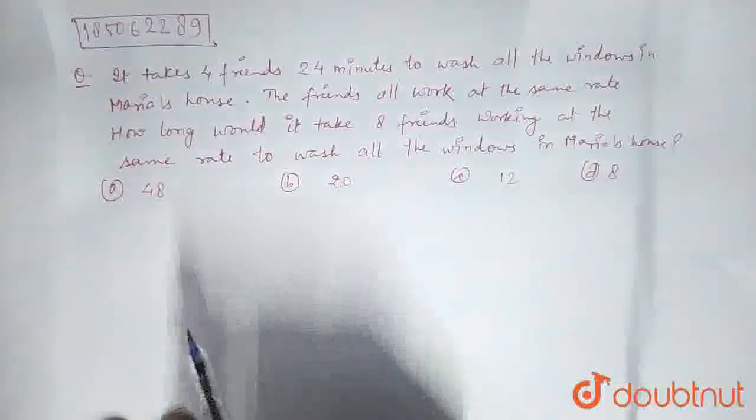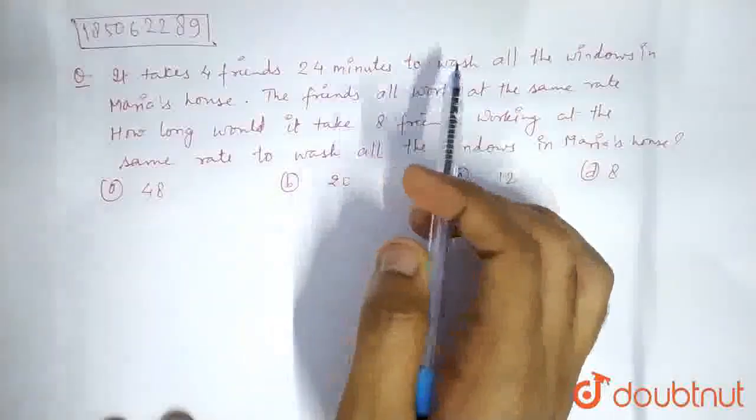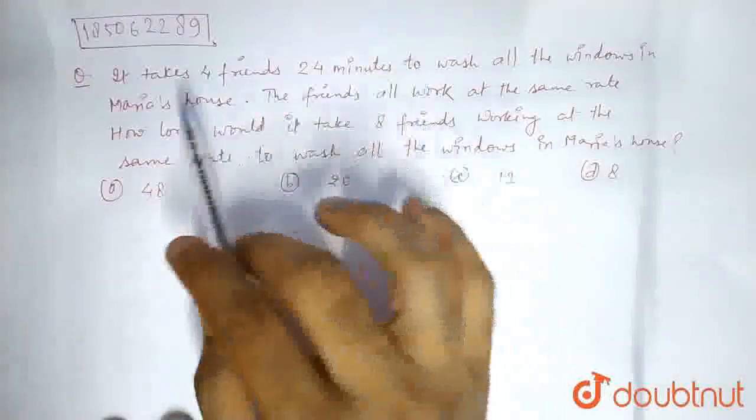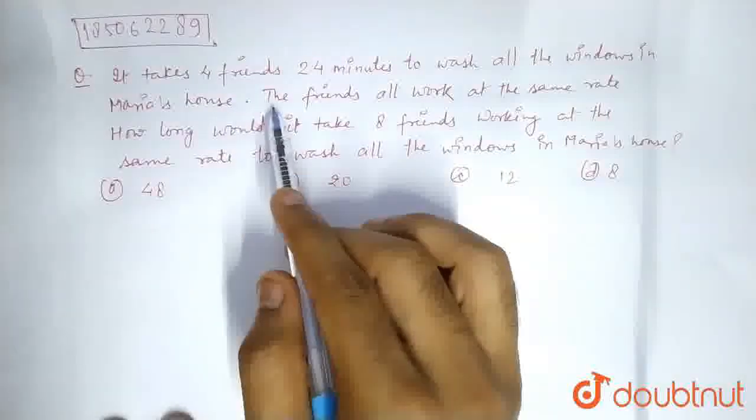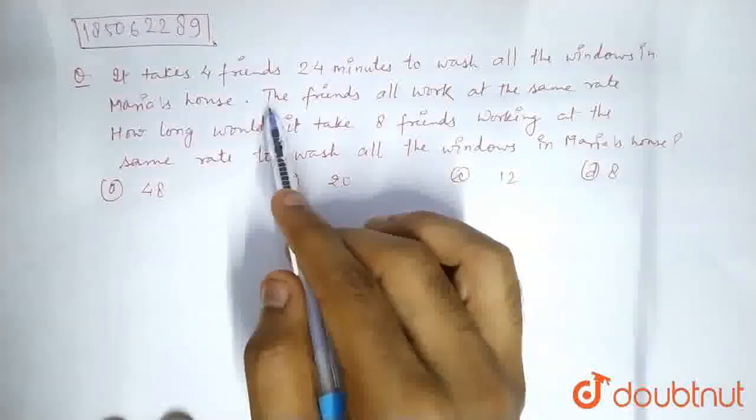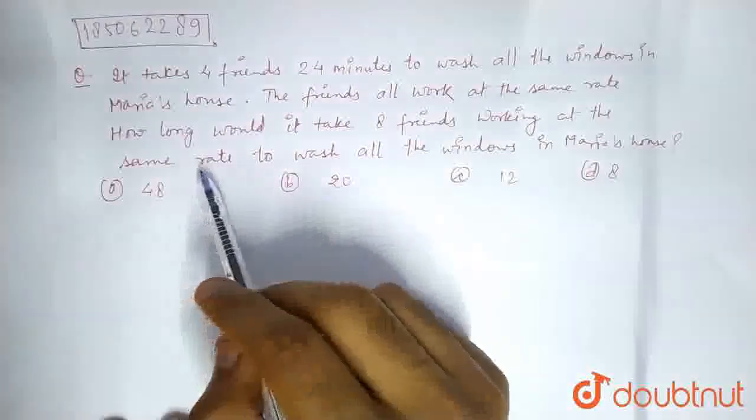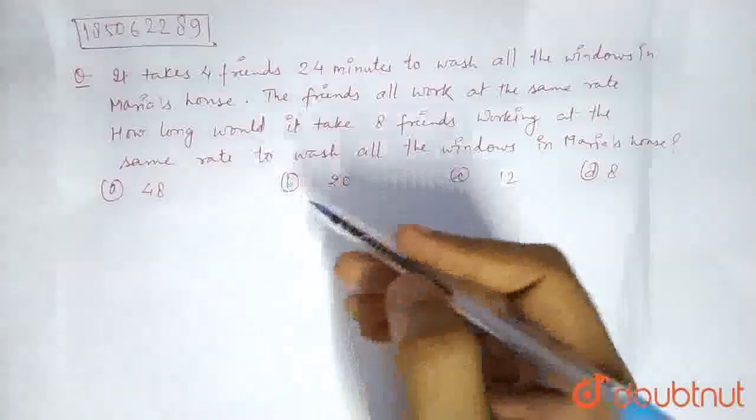Okay, so in the first scenario, we have 4 friends taking 24 minutes to do the job—that is, washing the windows in Maria's house. There is a second condition that the rate of work is the same. Now, the question asks: how long would it take 8 friends working at the same rate to wash all the windows in Maria's house?